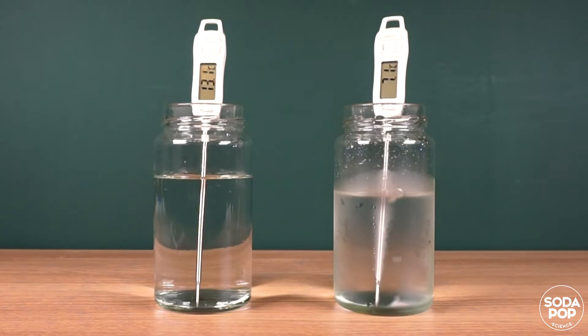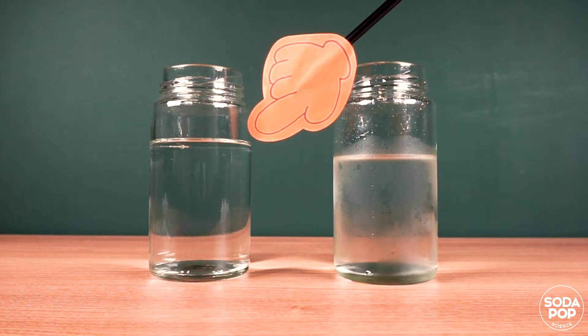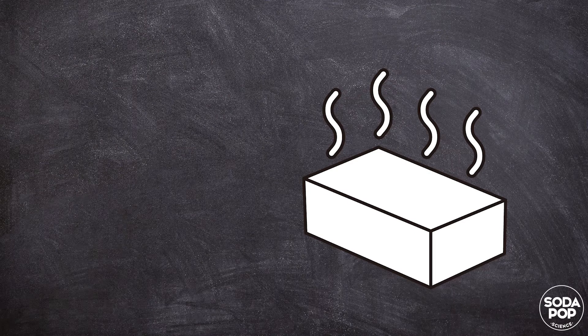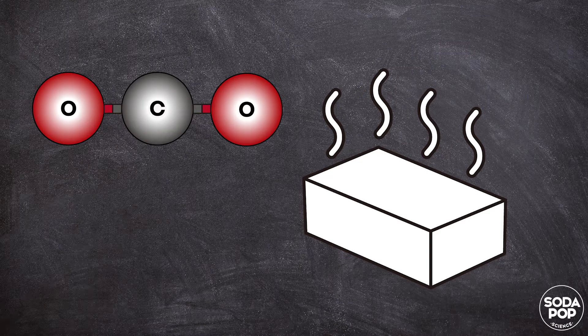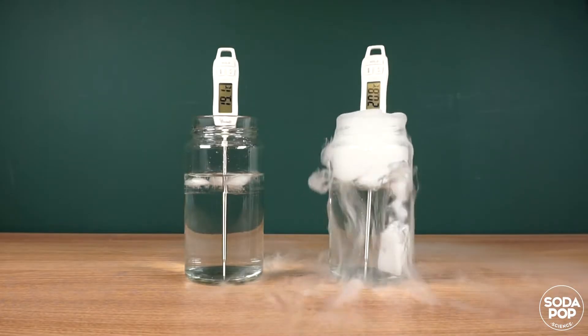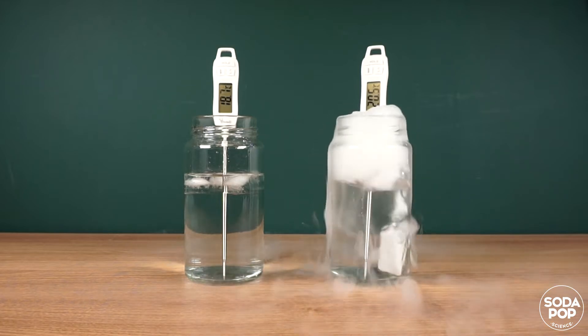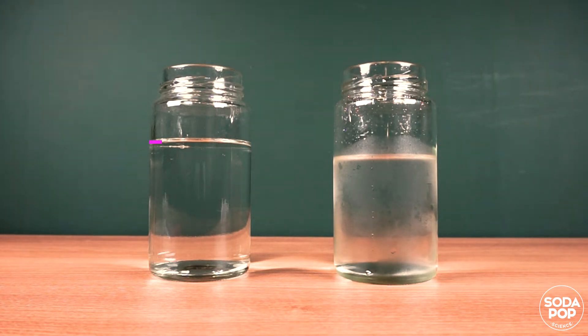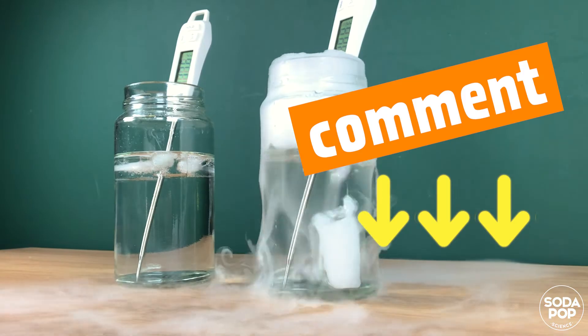The amount of water with ice cubes increased because ice melted into the water. Dry ice is frozen carbon dioxide, a molecule consisting of a single carbon atom bonded to two oxygen atoms. It does not melt into a liquid; instead, it changes directly into gas. That's why the amount of water with dry ice decreased.